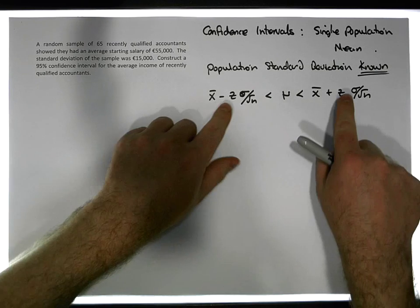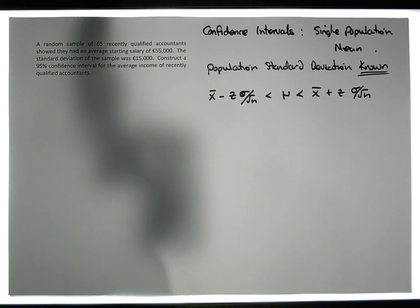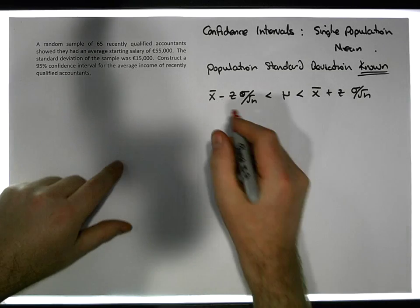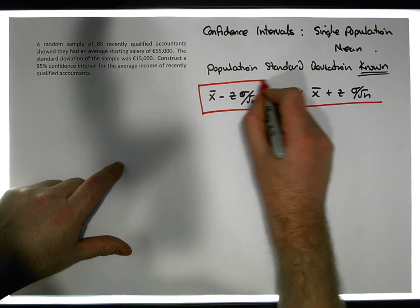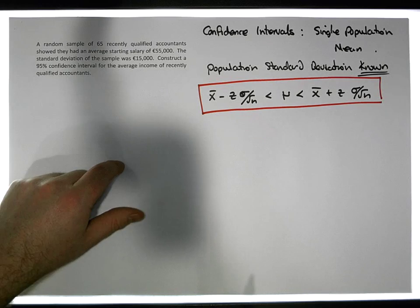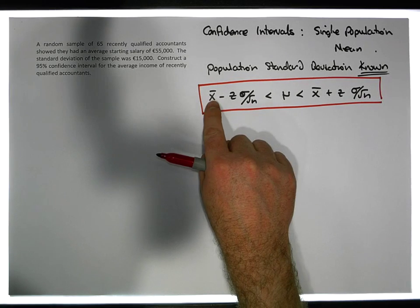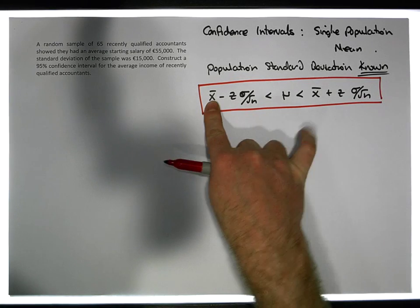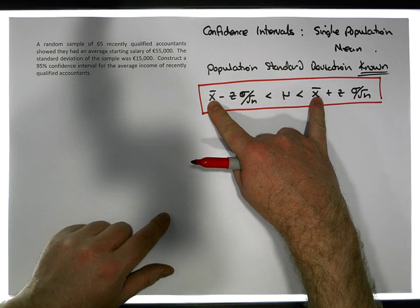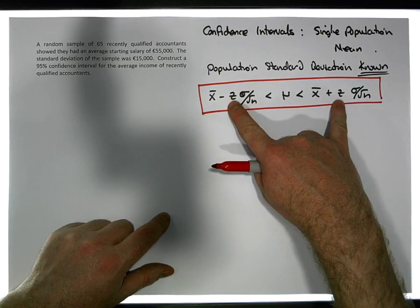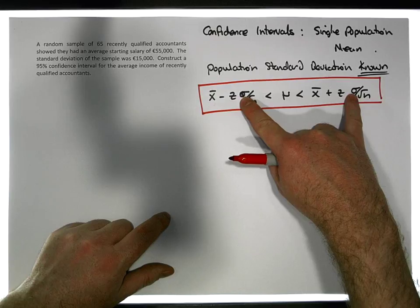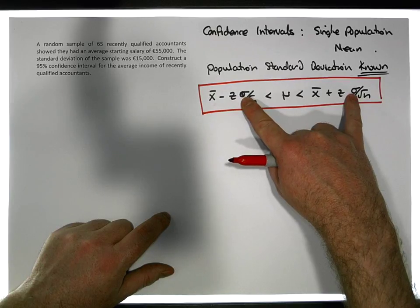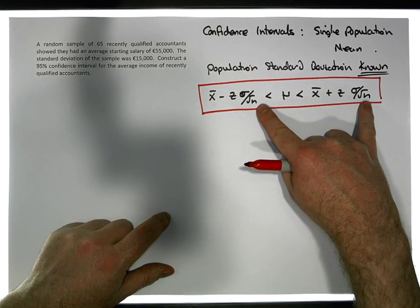If you know the population standard deviation, the confidence interval is based on a z-distribution, so we calculate the appropriate z-values. To construct this confidence interval we need: the sample mean, the appropriate z-statistic, the population standard deviation, and the sample size.